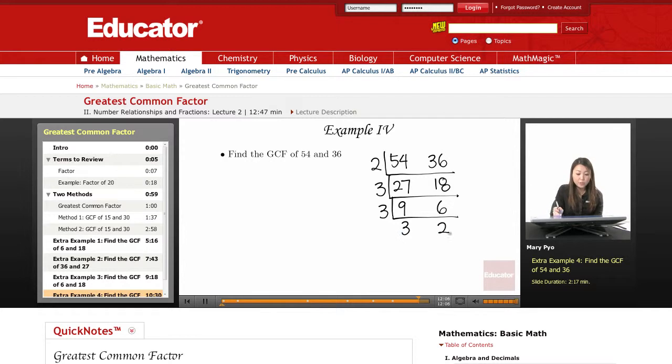From these two numbers, 3 and 2, their common factor is 1, which means I can take all the numbers on the side, not the bottom numbers, only the side, and multiply them out.